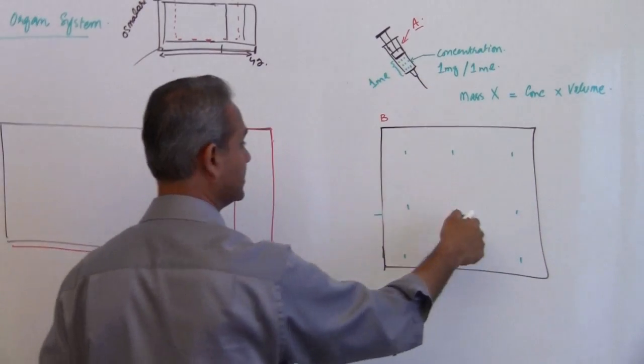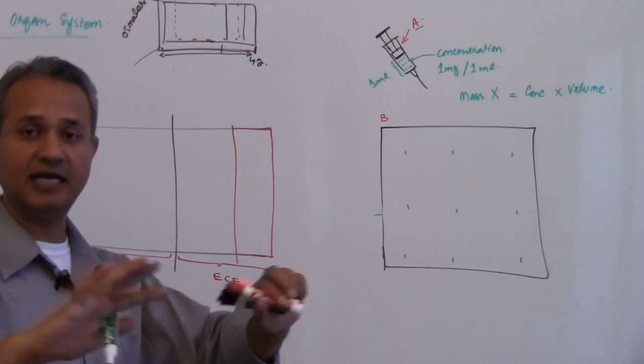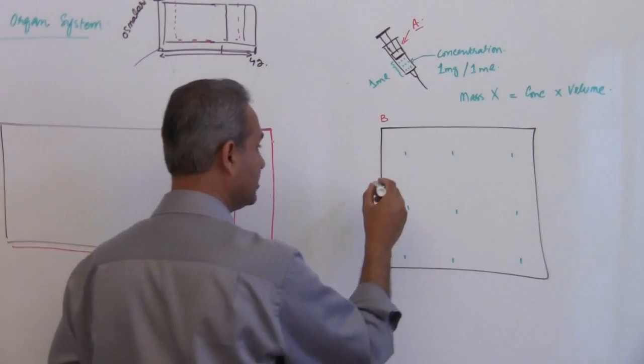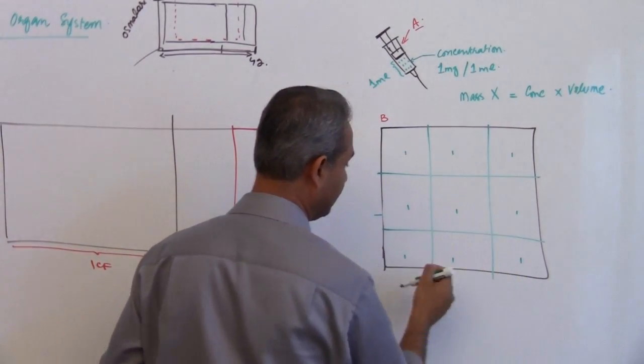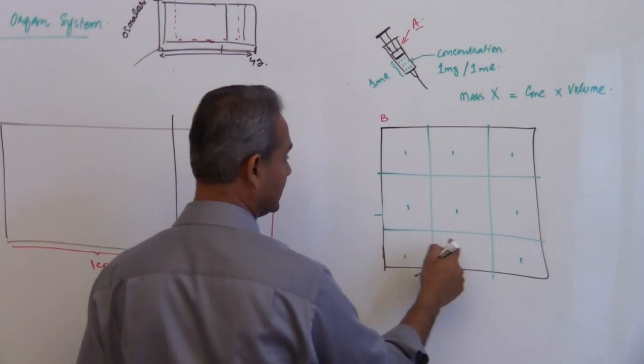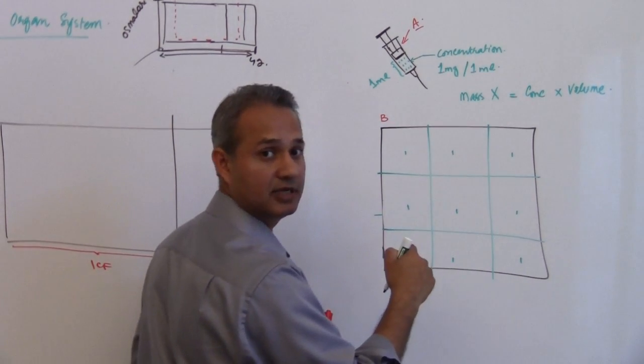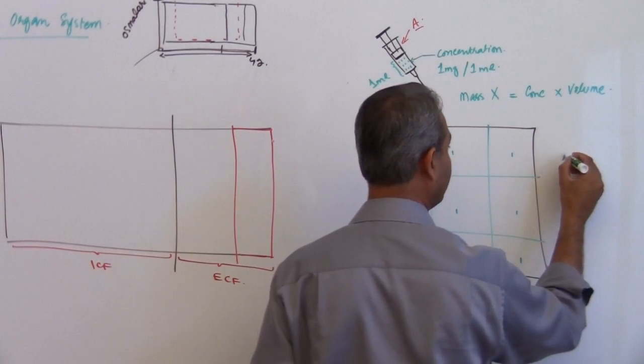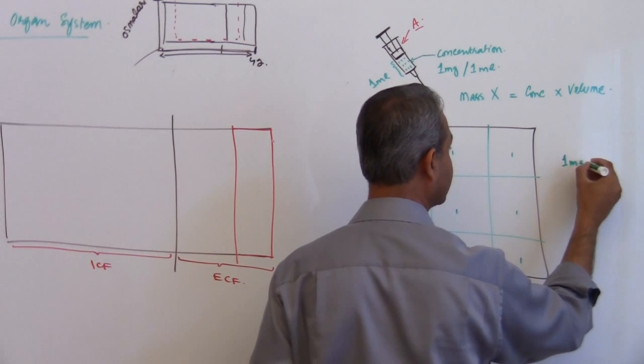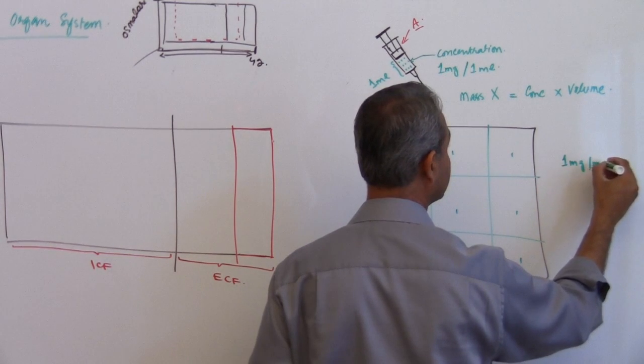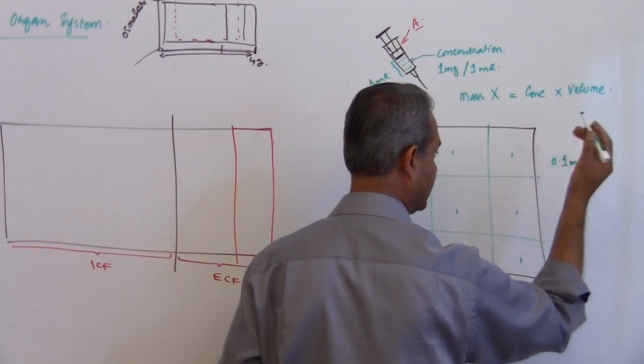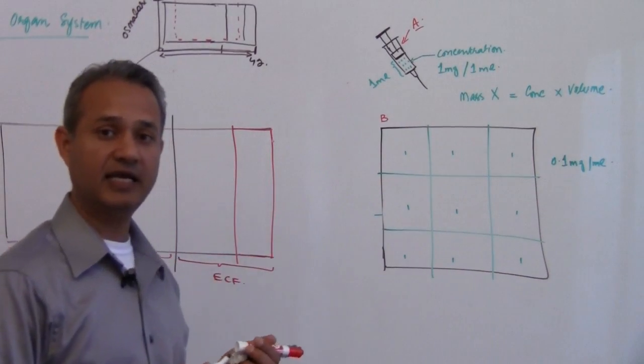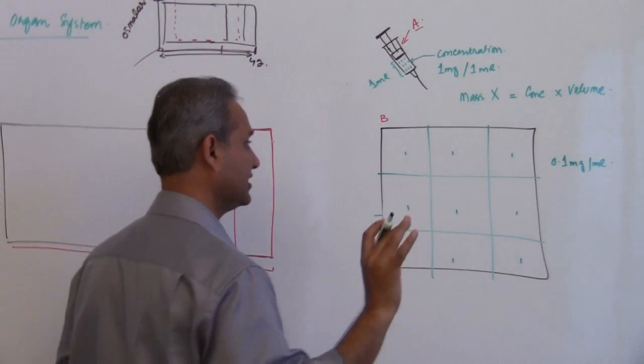These substances have gone in here and that has become equally dispersed. So now if I do a division and if I take a sample out, let's say these are all milliliters and what I'm seeing is that I have 1 milligram per milliliter or 0.1 milligram per milliliter, then I can use this formula. What I can say is this.